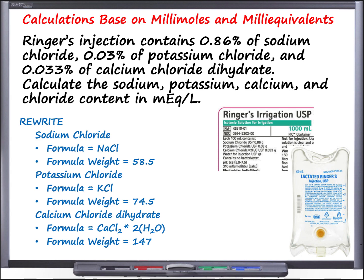Before we do the math, a little background. Way back in the 1800s, a physician named Sidney Ringer developed a solution containing several electrolyte salts dissolved in water to create an isotonic solution, referred to as Ringer's after its inventor. Ringer's solution typically contains sodium chloride, potassium chloride, calcium chloride, and sometimes sodium bicarbonate used to balance the pH.